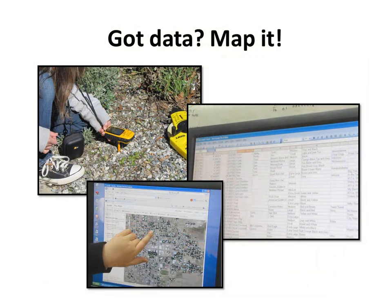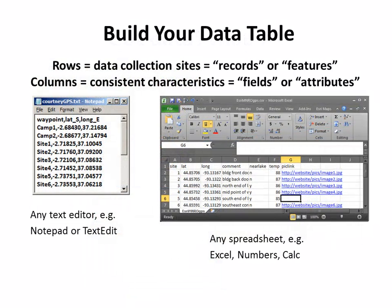Think about the project data that you have. As long as you have good location information and a set of characteristics about different features at different locations, you can see it better and understand it more powerfully on a map. Start with the data table. Organize your data as rows and columns, with each row representing a different record or feature, and each column or field representing a different characteristic.